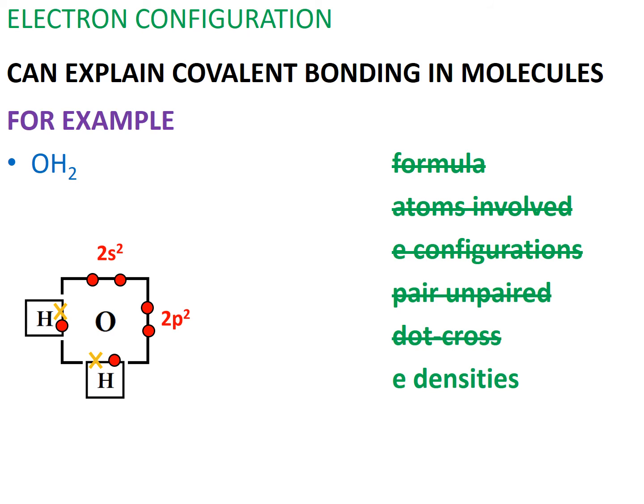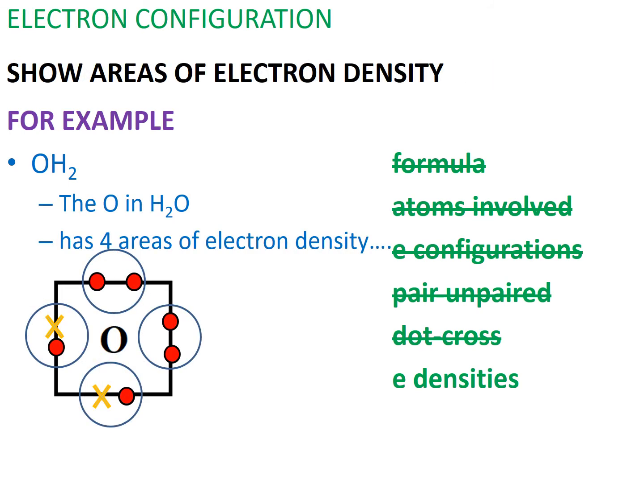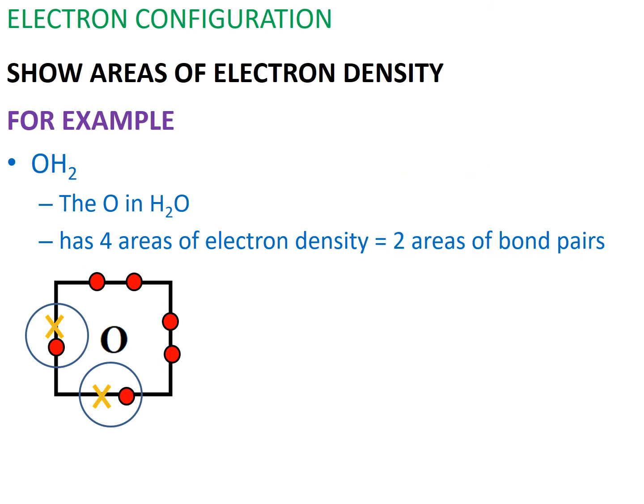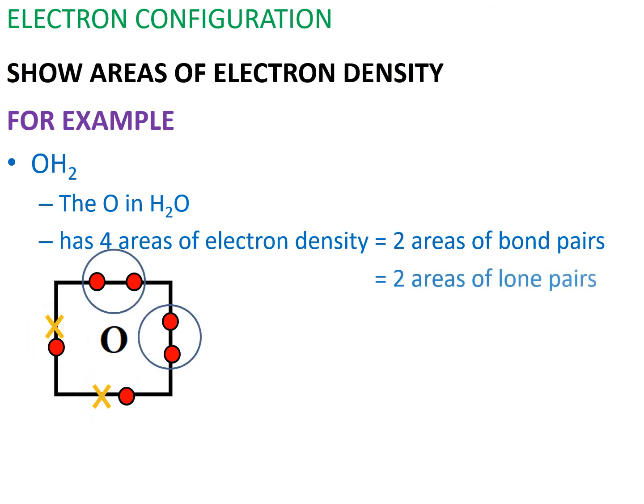If we were to describe the electronic structure of the central atom, which is oxygen, we would see that oxygen has four areas of electron density: two areas of bond pairs and two areas of lone pairs.